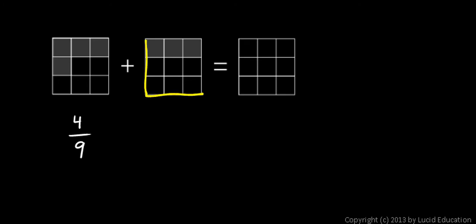The second square is also divided into nine pieces, and you can see that three of them are shaded, so three-ninths. If we were to add those together, we would have four of these little squares—one, two, three, four—and then we would be adding three more—one, two, three.